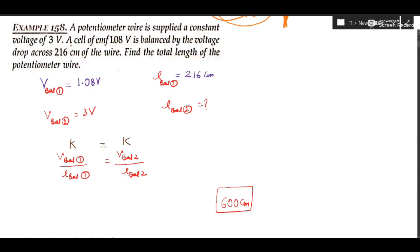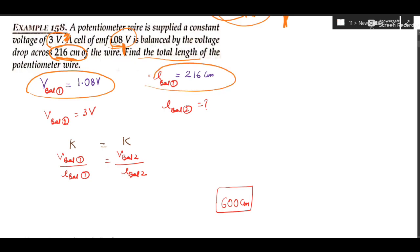In the next question, a potentiometer wire is supplied a constant voltage of 3 volt — this is your driver cell. A cell of EMF 1.08 volt is balanced by the voltage across 216 centimeter. We need to find the total length of the potentiometer wire. This voltage is the V_balanced and 216 cm is the L_balanced, so we can find one value of K using the formula K = V_balanced / L_balanced.